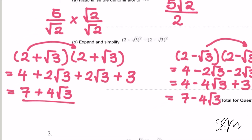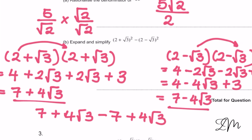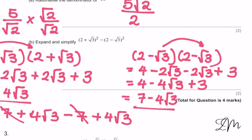And we want to do this one minus this one. So we get (7 + 4√3) minus (7 − 4√3). The 7s cancel, and we've got minus and a minus which makes a plus 4√3. So your final answer is 8√3.